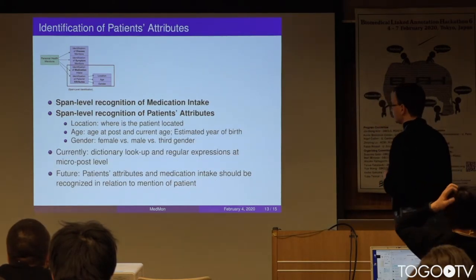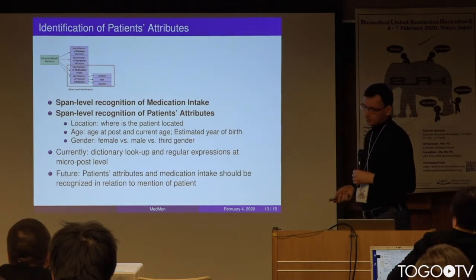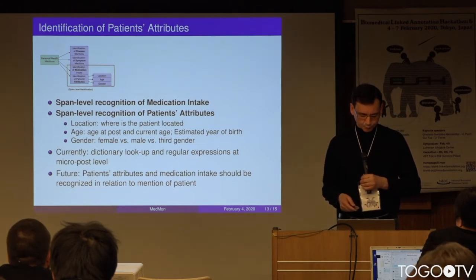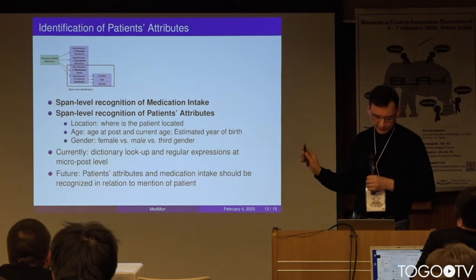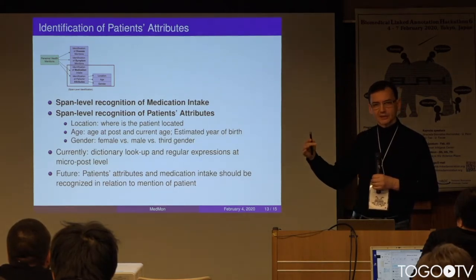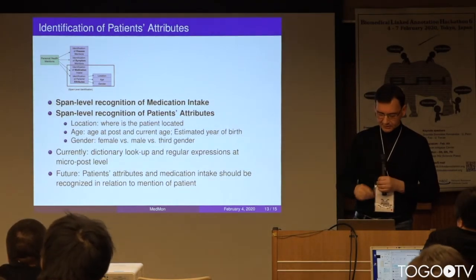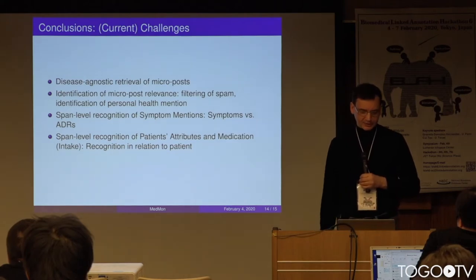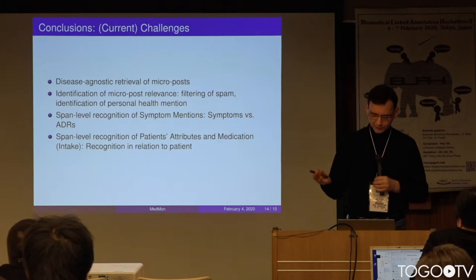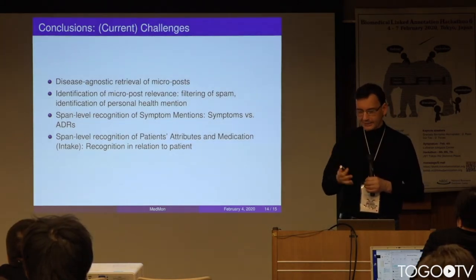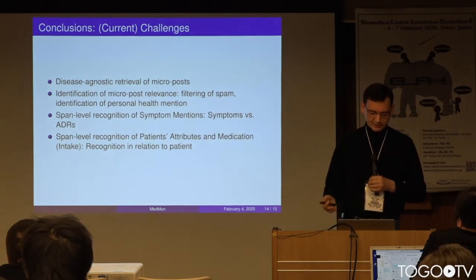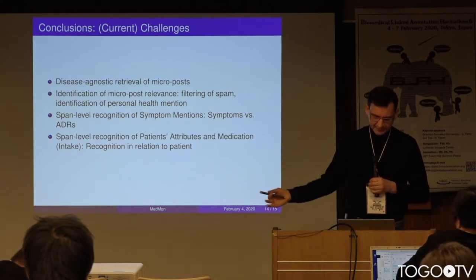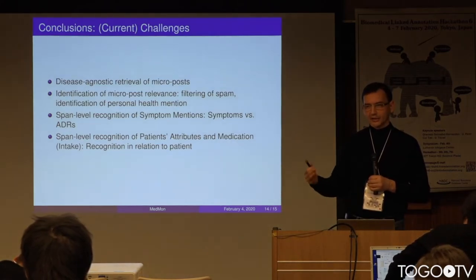We also want to distinguish some attributes of patients, like their location, whether the poster is the patient or a caretaker, the patient's age, and gender — to better classify the material we have. Some of this is done in a basic way so far, but we aim to add methodologies we've tested in the shared task. In conclusion for this part: we have implemented an efficient, disease-agnostic retrieval of micro-posts, because training on different conditions allows us to build the best classifier for a different condition — starting from conditions A and B, we were able to detect posts relevant to condition C.